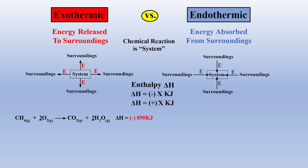For example, the combustion of methane has a negative enthalpy of 890 kilojoules, which means 890 kilojoules of energy are released per mole of methane combusted. If the sign is negative, then energy flows from the system to surroundings. Conversely, in an endothermic reaction, the sign is positive when energy flows from the surroundings to the system.